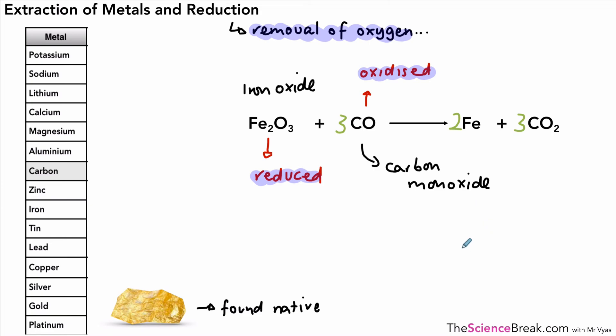And that's needed in order to produce the metal iron, which is the one being produced in this example. Okay, so that's our overview of extraction of metals and reduction. Thank you for watching, and I'll see you soon.